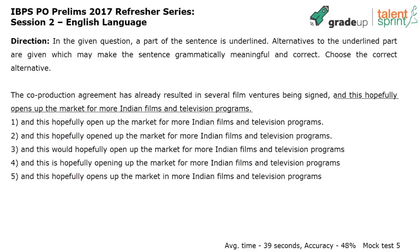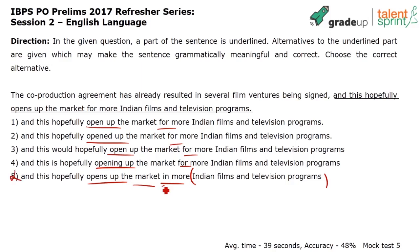Sentence improvement. The co-production agreement has already resulted in several film ventures being signed, and this hopefully opens up the market for more Indian films and television programs. The part that is highlighted is 'and this hopefully opens up the market for more Indian films and television programs.' The differences across options are: open up, opened up, open up, opening up, opens up. What can I quickly eliminate? Those saying option five — the market opens up for Indian films, using 'in' — that's the first to eliminate. And option two has a past tense context, so I'll eliminate two.